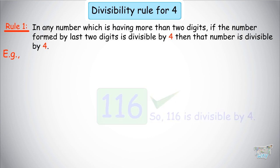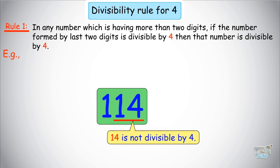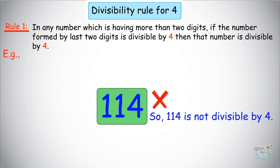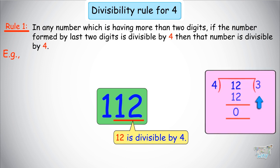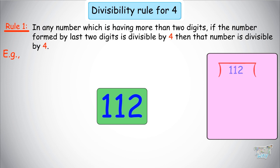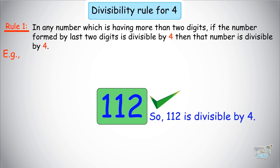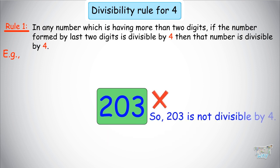Here we have another number, 114. The number formed by the last 2 digits is 14. We check whether 14 is divisible by 4 — it is not, so 114 will also not be divisible by 4. The next number is 112. The last 2 digits form 12, and 12 is divisible by 4, so 112 is also divisible by 4. You can verify: 112 divided by 4 is 28. Next is 203 — the last 2 digits form 3, which is not divisible by 4, so 203 is also not divisible by 4.